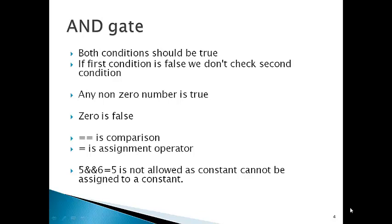In AND gate, both conditions must be true. If the first condition is false, obviously the true or false of the second condition doesn't matter since the result will be false anyway. So to improve processing speed, as soon as the first condition is false in an AND gate, we don't check the second condition. Also, if you place any non-zero number directly in a condition, it is always true; and if you place zero, that is false. Double equals-to (==) is comparison, whereas single equals-to (=) is assignment operator — sometimes we accidentally use assignment where we want comparison. For example, '5 = 6' is not allowed as constants cannot be assigned to a constant.